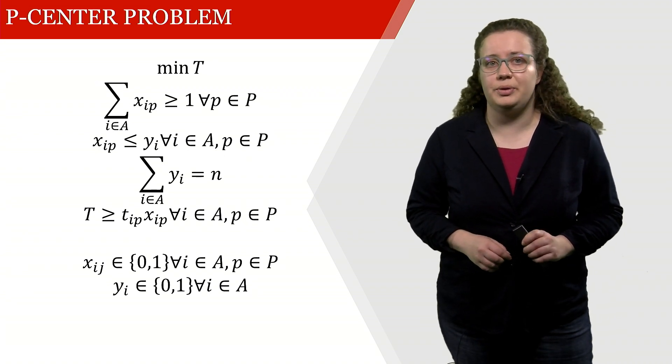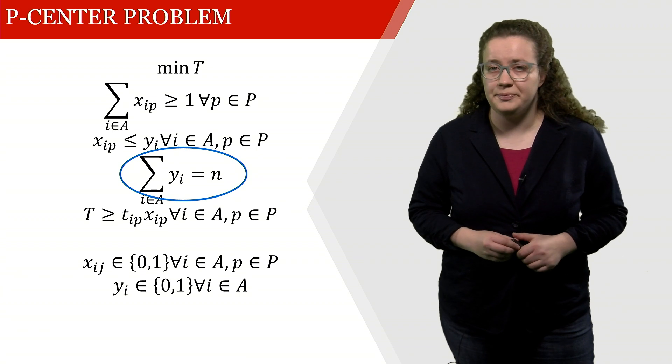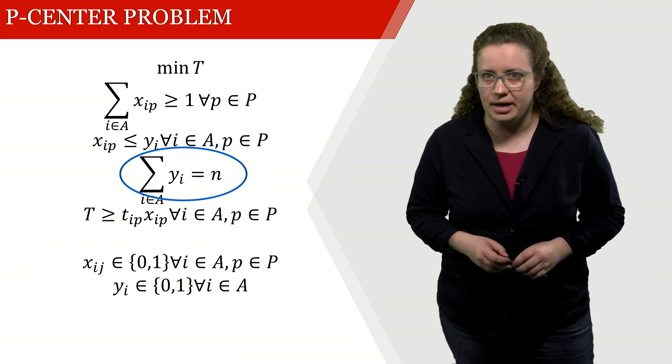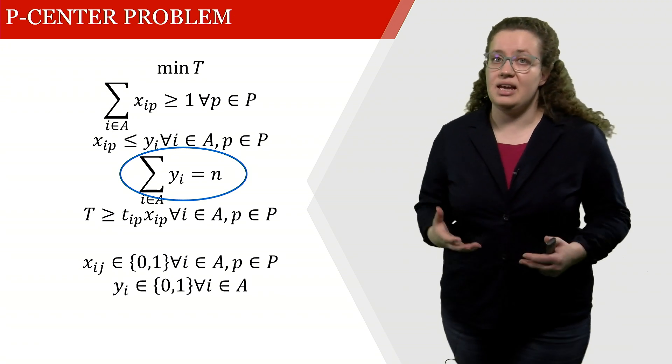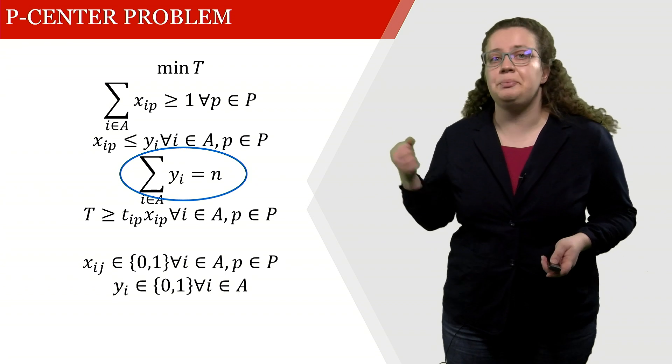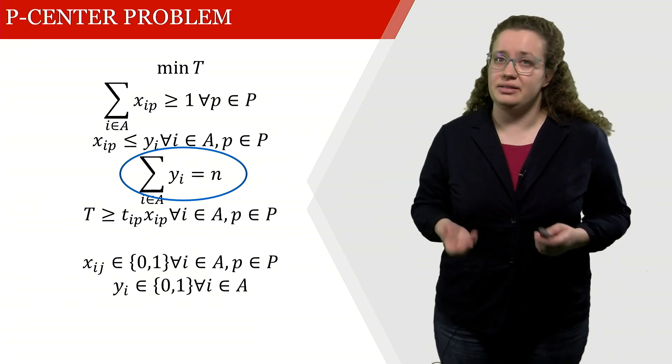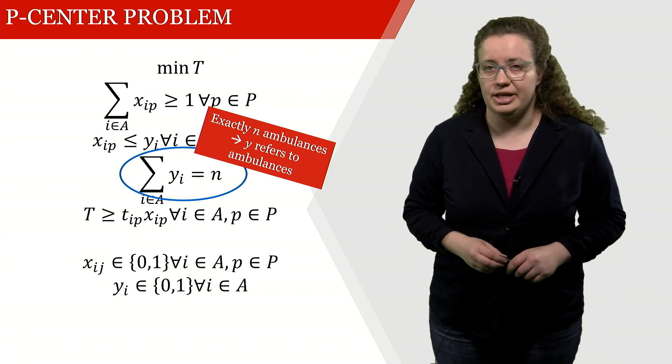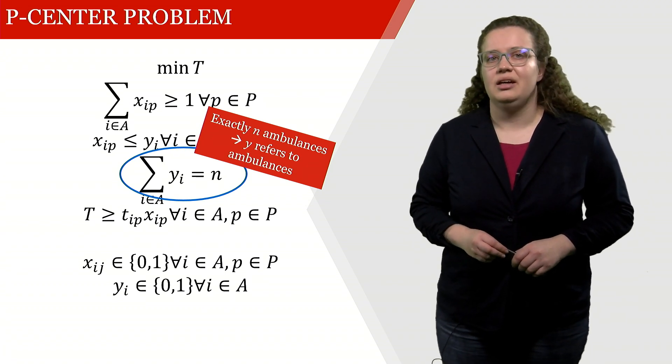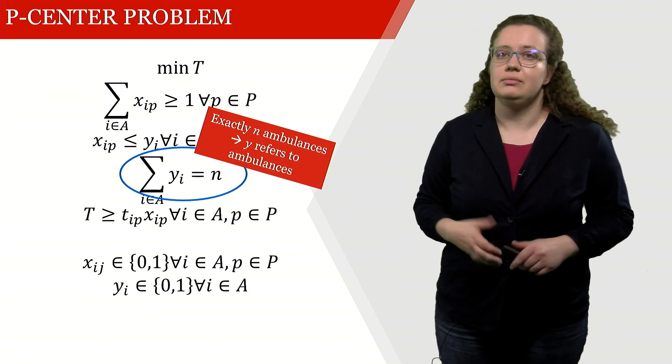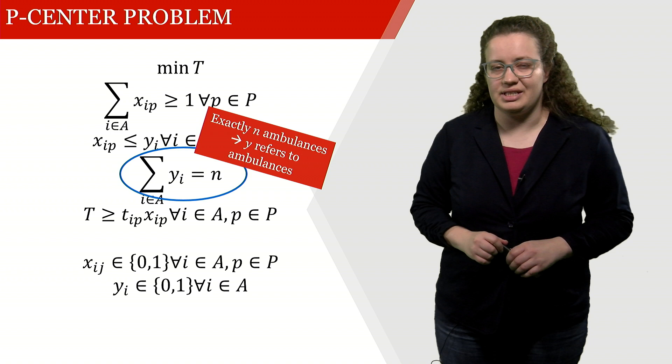So first of all what we're looking at is this constraint. So we're seeing that the sum overall yi equals to N. We remember that N is the number of ambulance stations which means that most likely the yi in this case has to refer to opening an ambulance station. So here we're saying if we open this then the yi is 1 and this is our decision variable in this case.